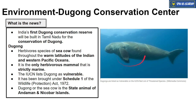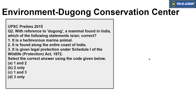The sea cow Dugong is categorized as Vulnerable in the IUCN Red List and is listed under Schedule 1 — meaning it receives the highest level of protection — under the Wildlife Protection Act 1972. The Dugong is also the state animal of Andaman and Nicobar Islands. UPSC had asked a question on this sea cow Dugong in April 2015, and the same question has been provided for practice. Please attempt the question and submit your answer in the comment section.